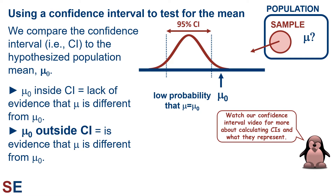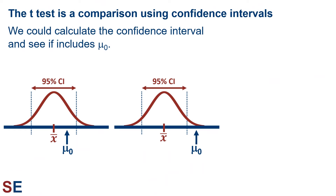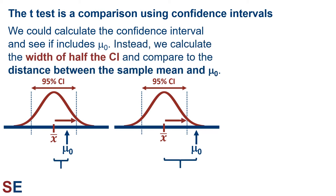On the other hand, if mu naught is outside of the confidence interval we calculate, that provides evidence that the population mean is different from mu naught. That's the sort of result we would rarely expect to see — the probability of the confidence interval not including mu naught, if that's the population mean, is very low. The t-test is a comparison of the confidence interval to the hypothesized population mean mu naught. In practice, we calculate the width of half the confidence interval and compare it to the distance between the sample mean and mu naught. If that distance is larger than half the confidence interval, then mu naught would lie outside of the confidence interval.